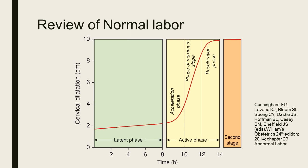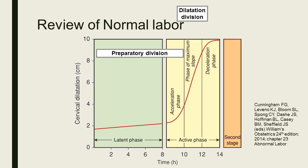There are also three functional divisions of labor. The preparatory division encompasses the latent phase and the acceleration phase. Although the cervix dilates little during this division, the connective tissue of the cervix changes considerably. Sedation and conduction analgesia are capable of arresting this division. The second is the dilatation division, where dilatation proceeds at its most rapid rate and is unaffected by sedation. The third is the pelvic division, which encompasses the deceleration phase and the second stage of labor, where the cardinal fetal movements take place.